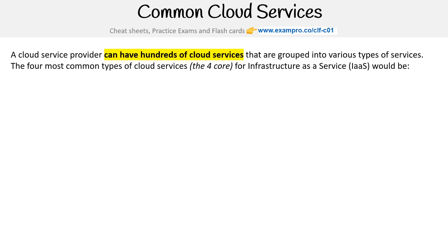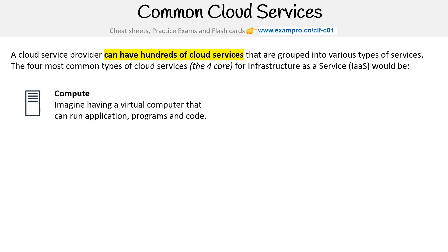A cloud service provider can have hundreds of cloud services grouped into various types. The four most common types of cloud services for infrastructure as a service — I call these the four core — would be: compute, networking, storage, and databases.